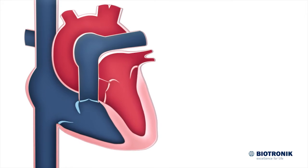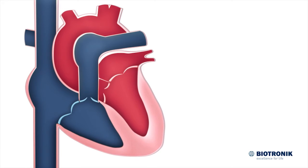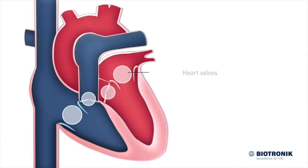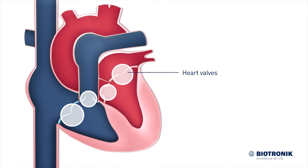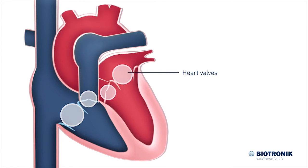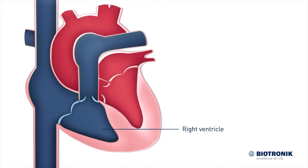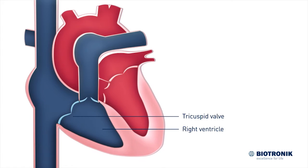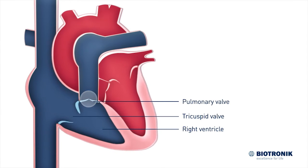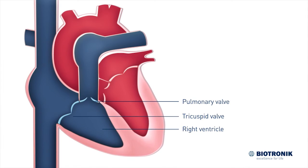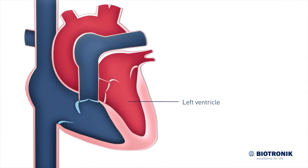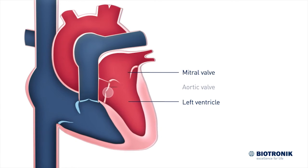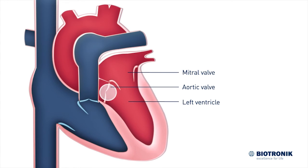To keep the blood flowing in the right direction, there are one-way valves at the entrance and exit of each ventricle — the heart valves. The entrance to the right ventricle is through the tricuspid valve; the exit is through the pulmonary valve. The entrance to the left ventricle is through the mitral valve, and the exit is through the aortic valve.